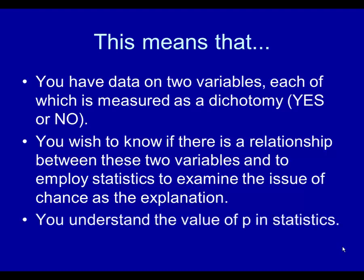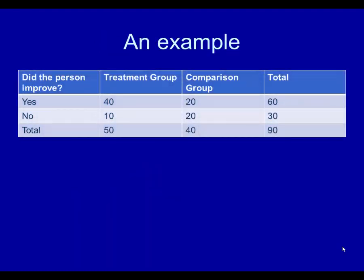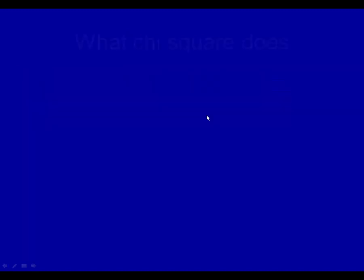I'm assuming you understand the value of p in statistics and generally what statistics do, even though you're not expected to know a particular statistic. Here's an example. The question: did the person improve, yes or no? We have two groups, a treatment group and a comparison group. Forty people in the treatment group improved, ten people in the treatment group did not. For the comparison group, we have twenty people who improved and twenty people who did not.